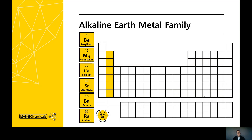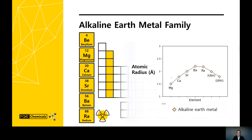Radium is part of group 2 on the periodic table of elements. Group 2 includes beryllium, magnesium, calcium, strontium, barium, and of course radium. As we move down this column on the table, the density increases. And as shown on the y-axis, the atomic radii converge to the point where barium and radium nearly have the same atomic radius.